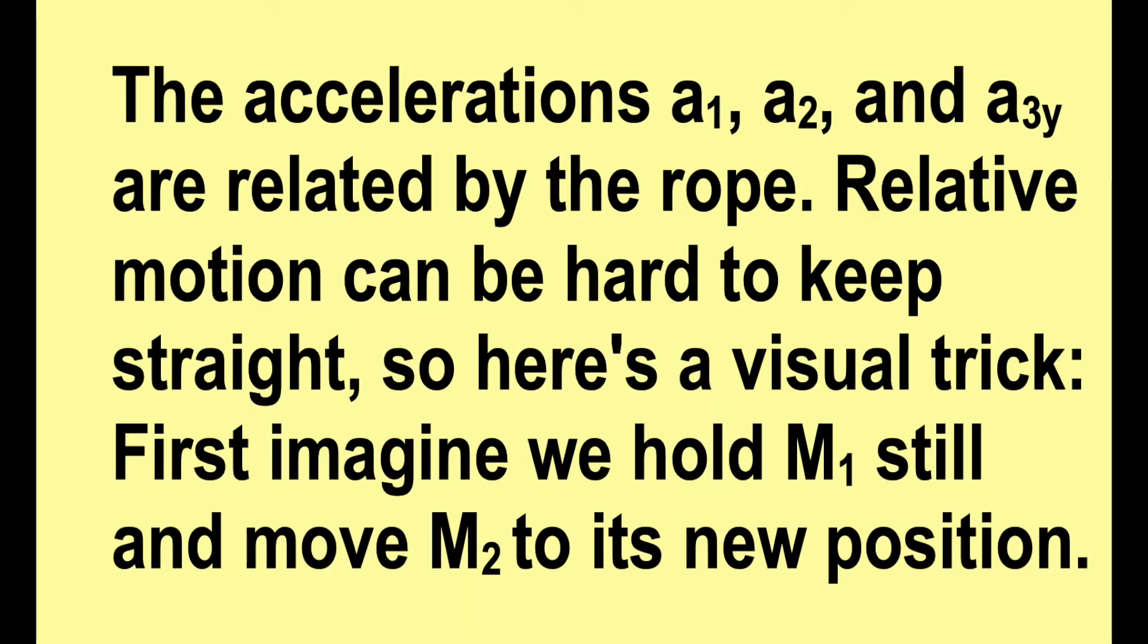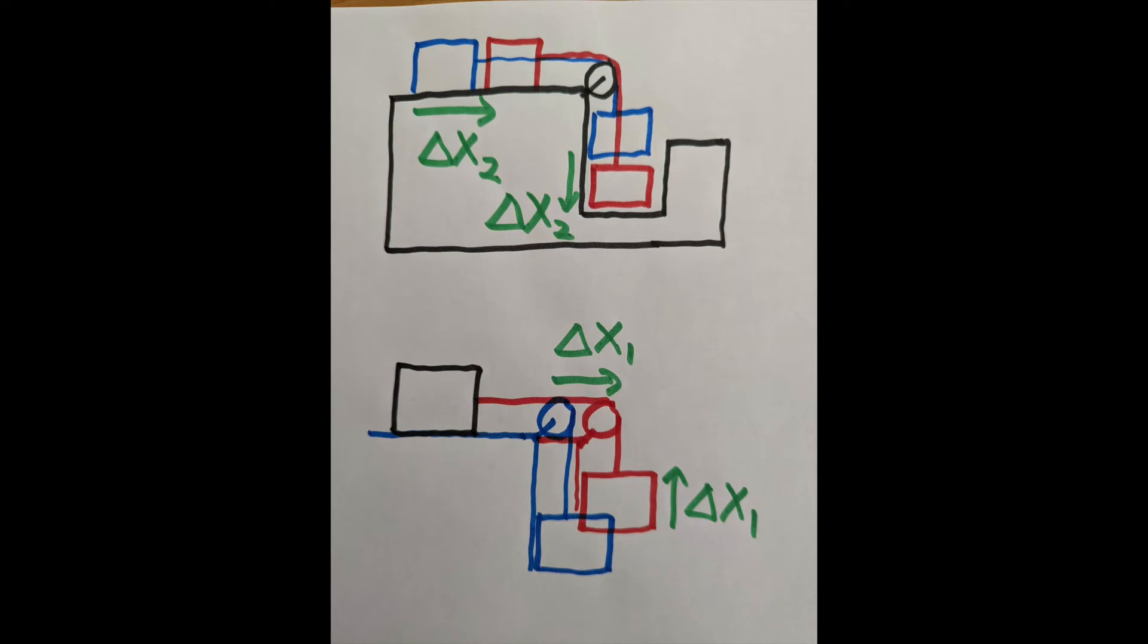The missing piece is that the accelerations are all related by the rope. Now relative motion can be hard to keep straight, so here's a visual trick I use sometimes. First, imagine we hold m1 still and move m2 to its new position. That's the upper drawing here. Notice that m2 moves to the right a distance delta x2, and m3 moves down the same amount.